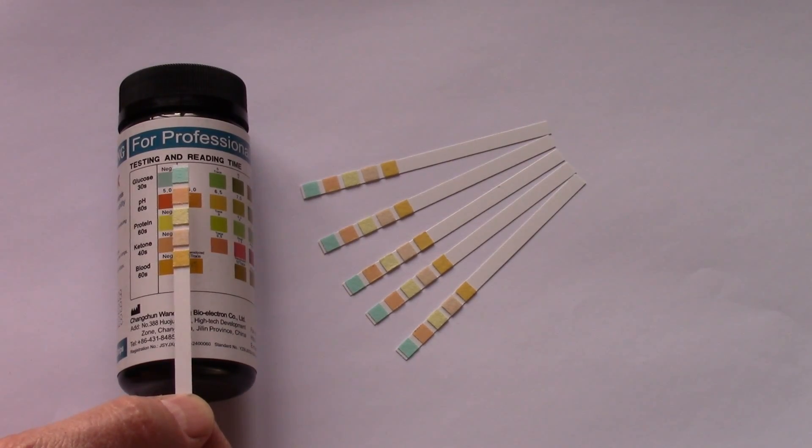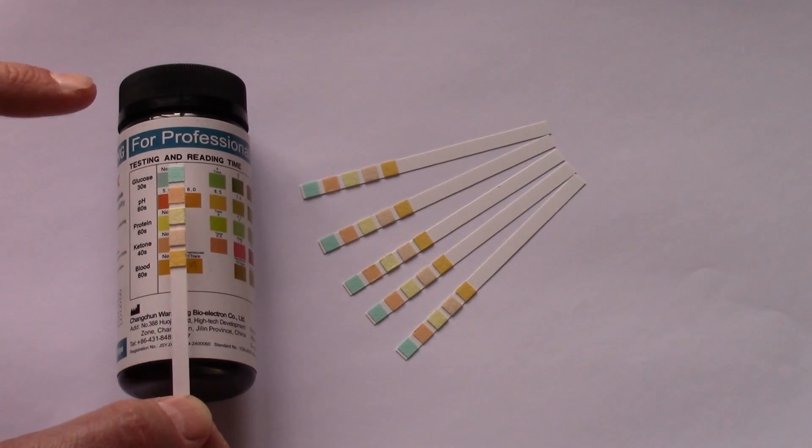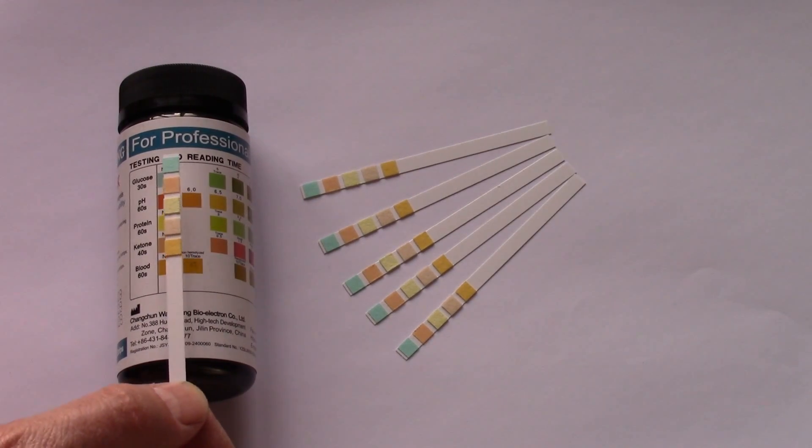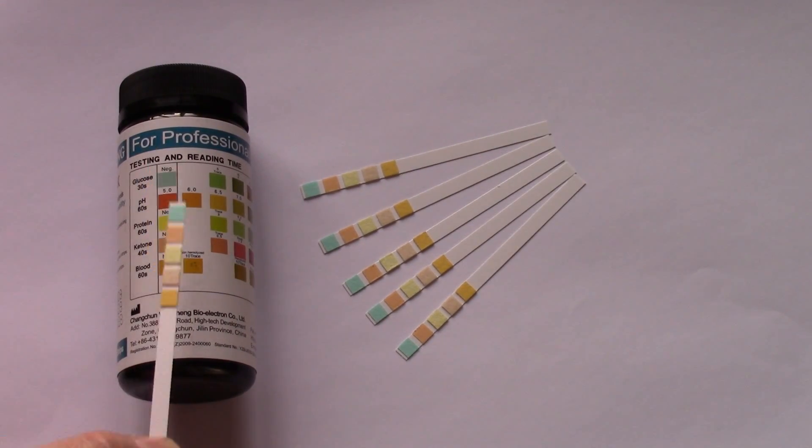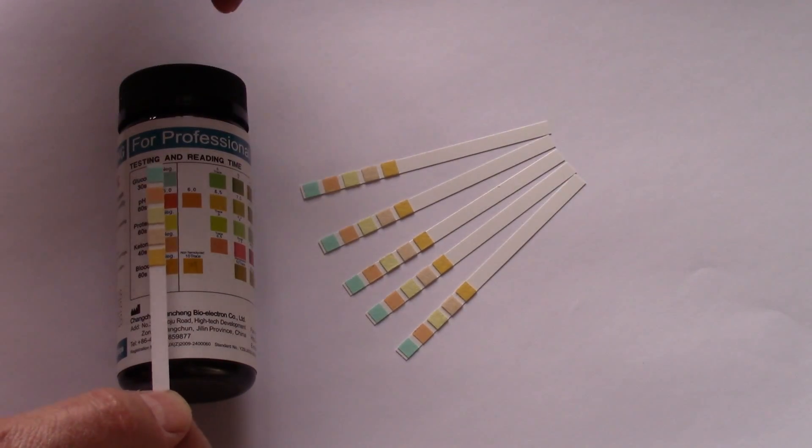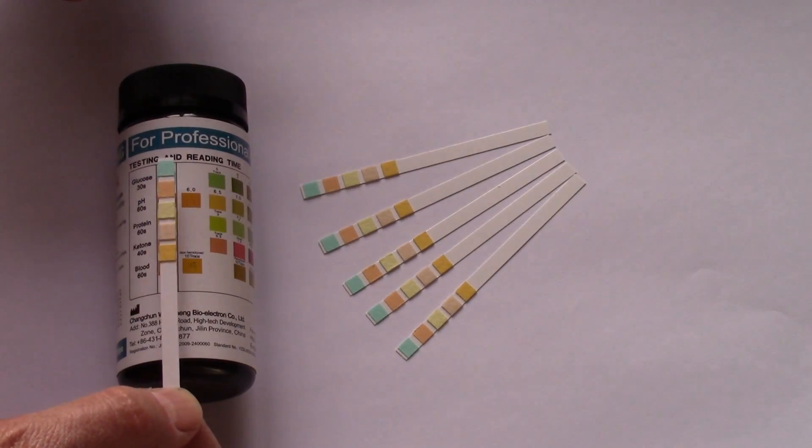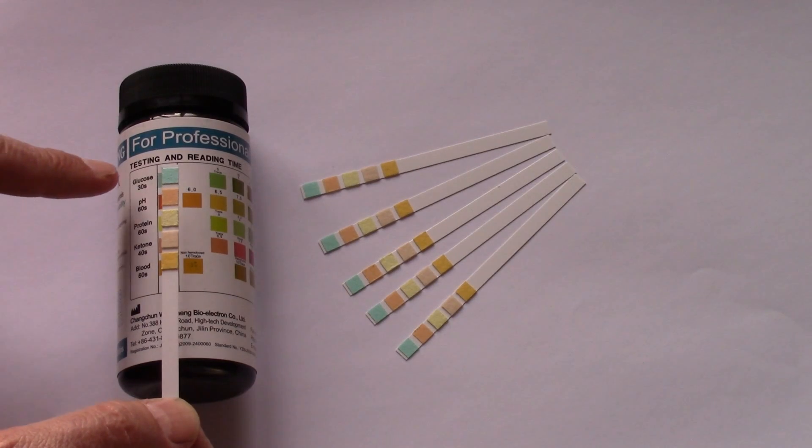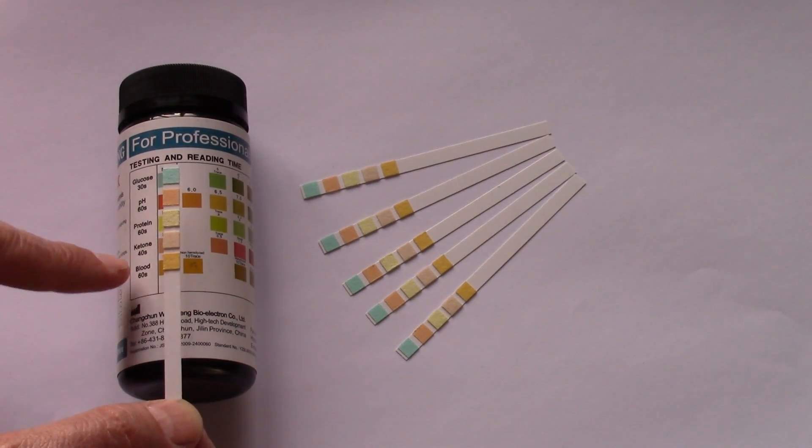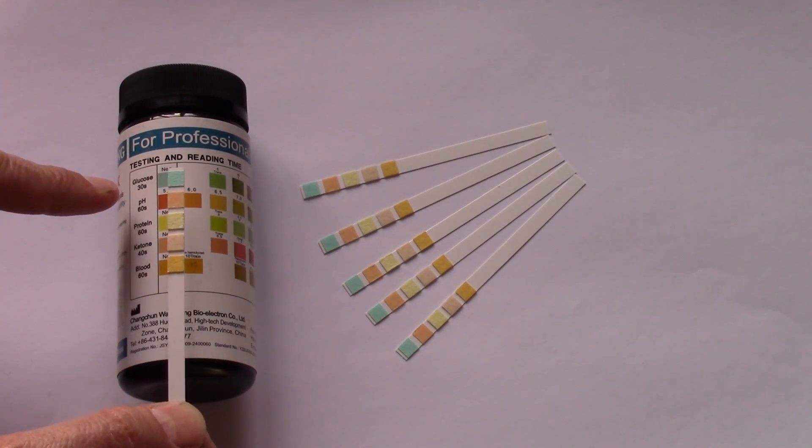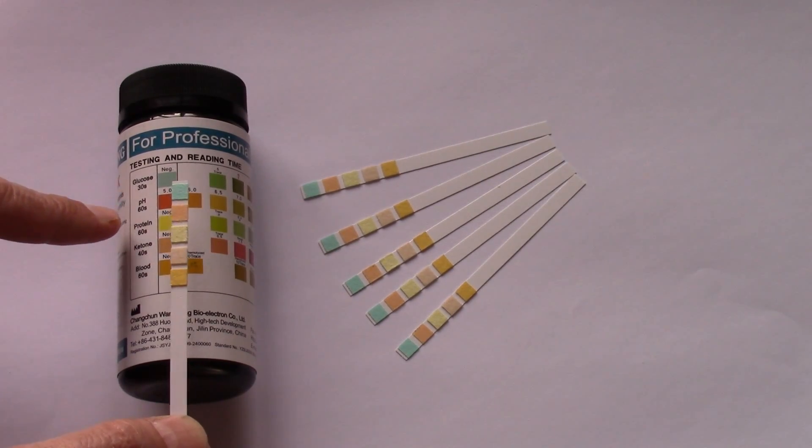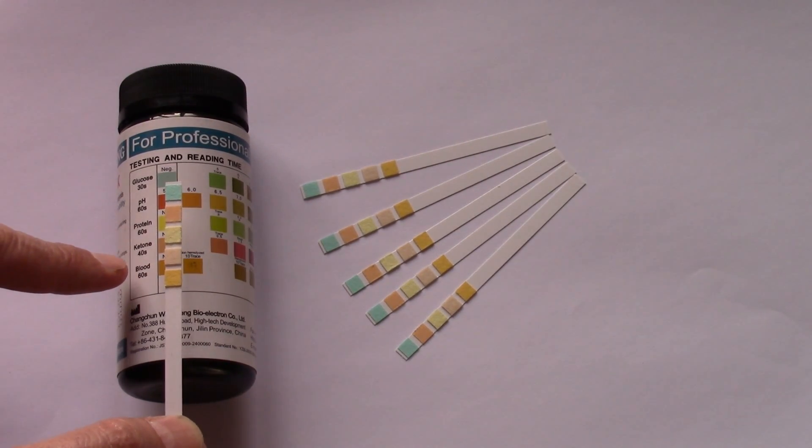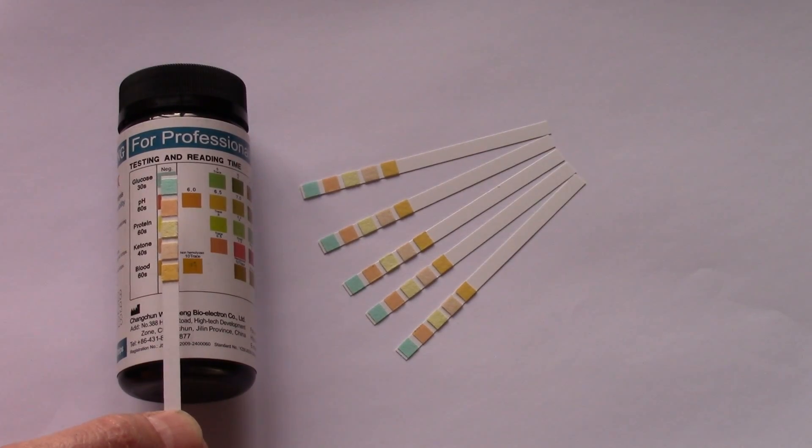The pad colors will darken slightly when they're wetted into the urine sample, but a full negative set of results should match that column indicated within the black linings. To indicate what levels of abnormalities you've detected, you have to look at these at the specific read times indicated next to the parameter. You're reading glucose at 30 seconds, pH, protein and blood at 60 seconds, and ketones at 40 seconds.